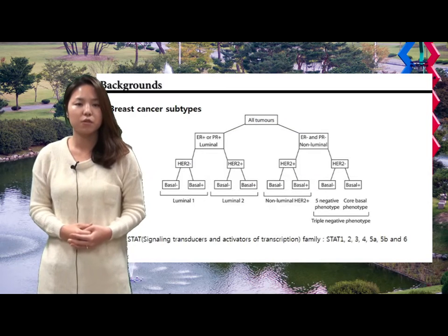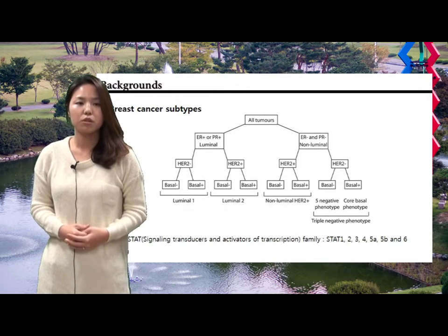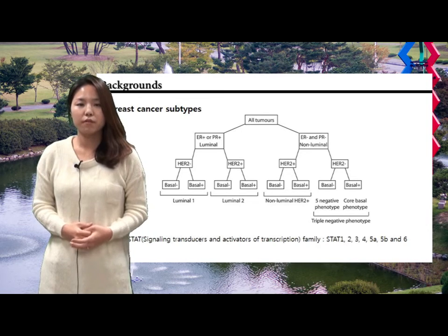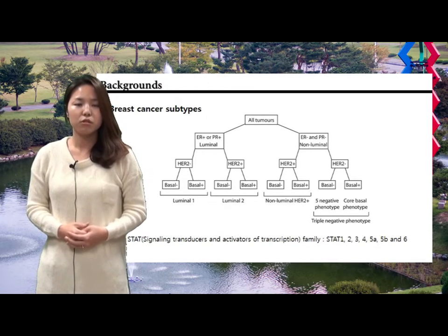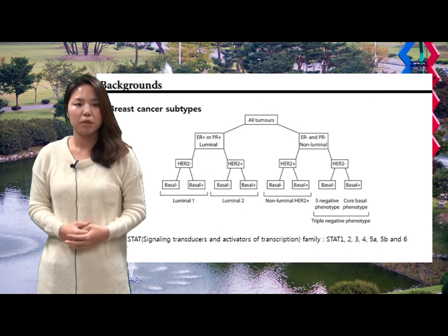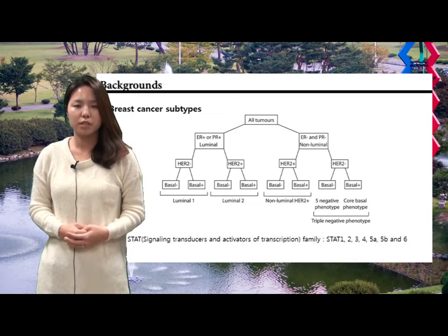Breast cancers are classified as four major subgroups according to the existence of estrogen or progesterone receptor and human epidermal growth factor receptor 2, HER2. ER or PR positive breast cancers are called luminal subtype. Using gene expression profiling, the ER positive subtype can be further divided into luminal A and B subtypes. Triple negative breast cancer cells, TNBC, can be additionally categorized into six different subtypes. The paper compared expression and activity of different STAT family members in different subtypes of breast cancers.